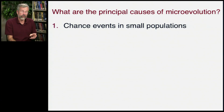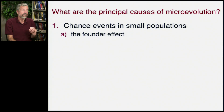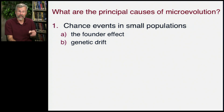Now let's examine the causes of microevolution. The first principal cause of microevolution involves chance events in very small populations. This will have two ideas: first is the founder effect, and secondly is genetic drift.